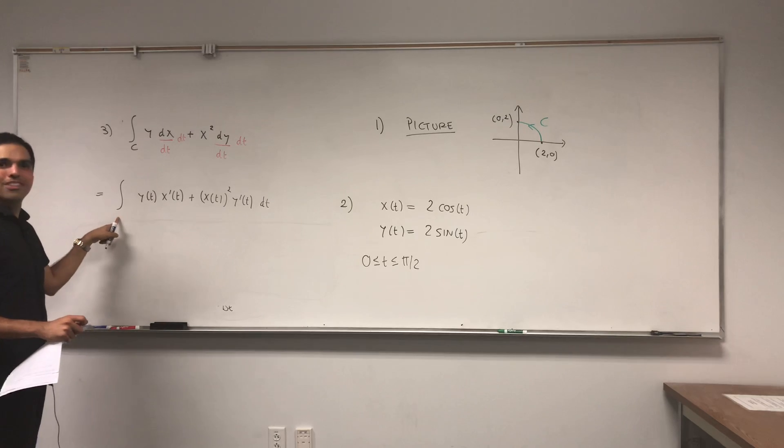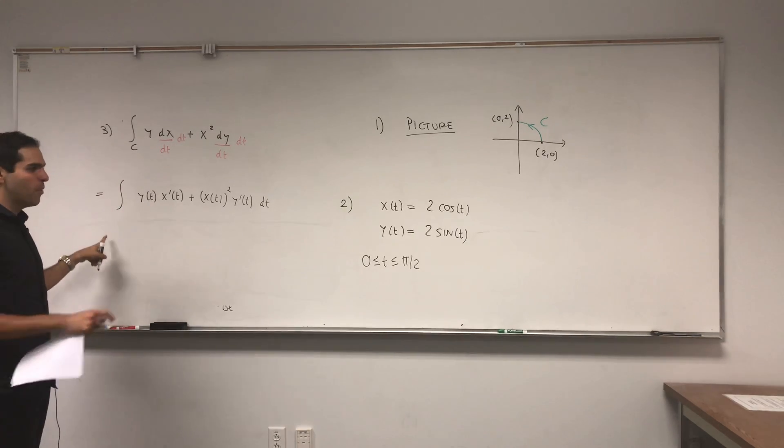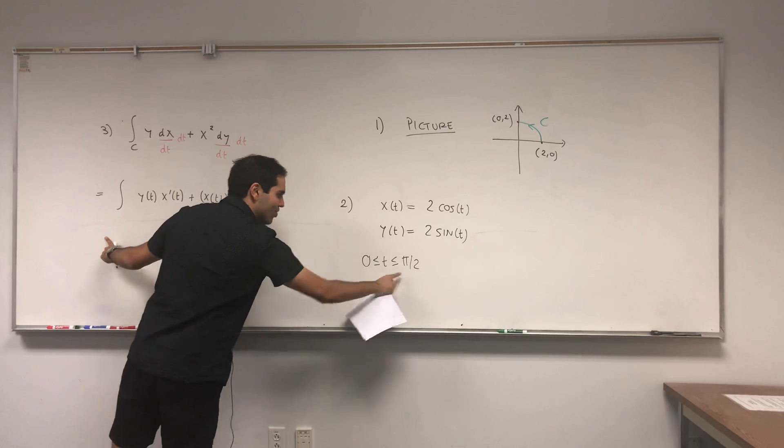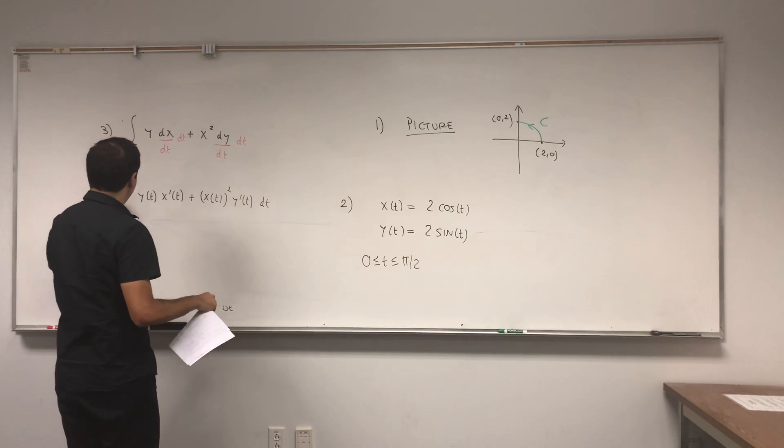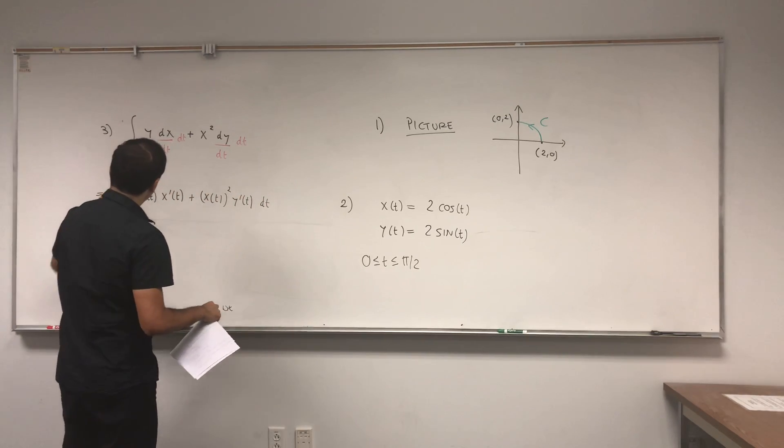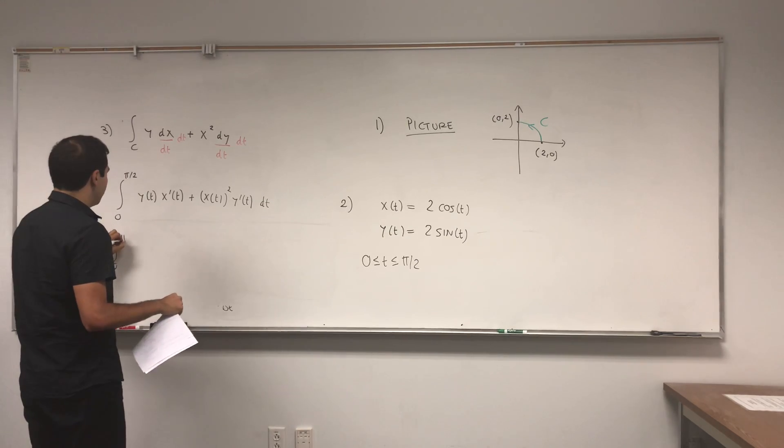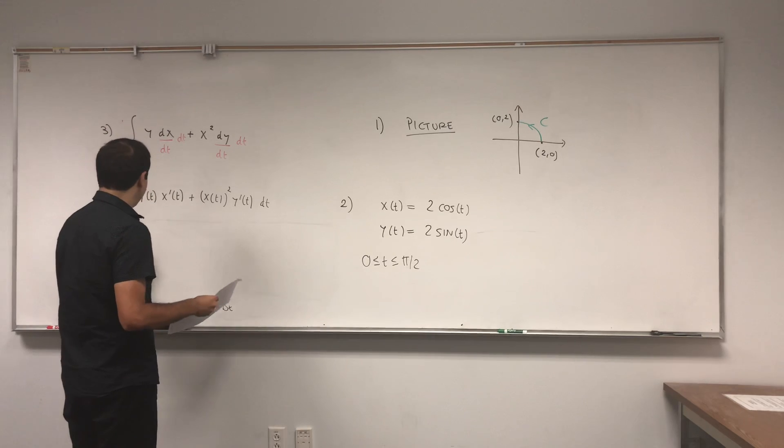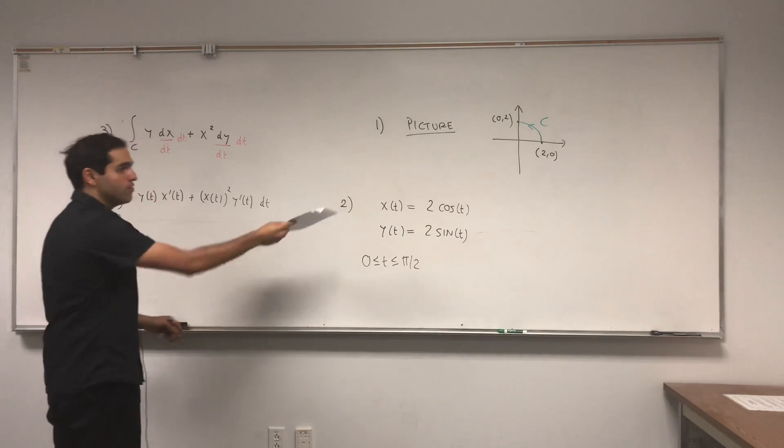And the nice thing is those have independent meanings because what this becomes is the integral from something to something of y of t times x prime of t plus x of t squared times y prime of t dt. And again, this is a very important observation. This will also help us later for vector fields. Now everything is in terms of t.